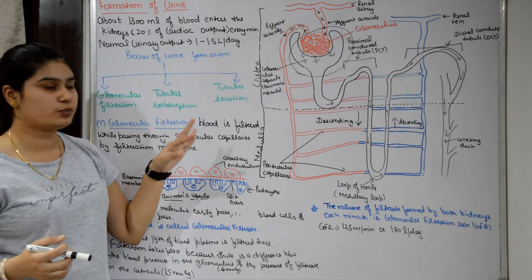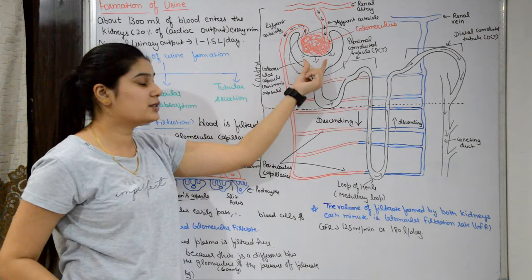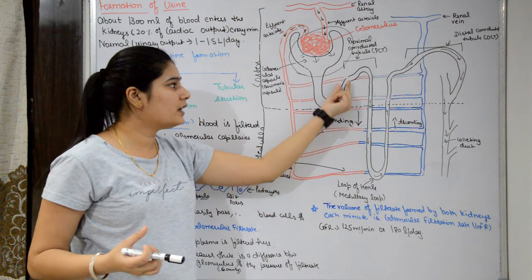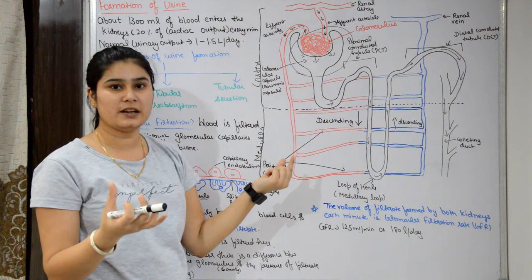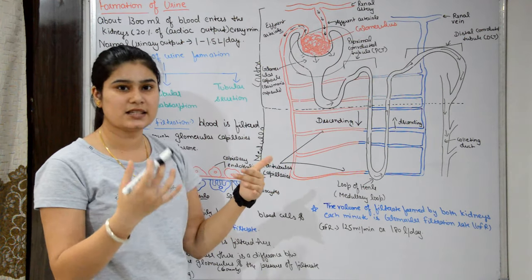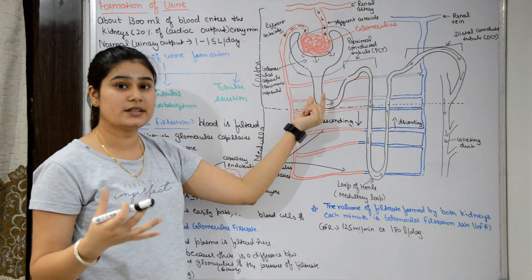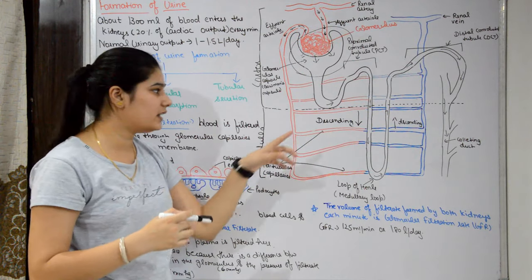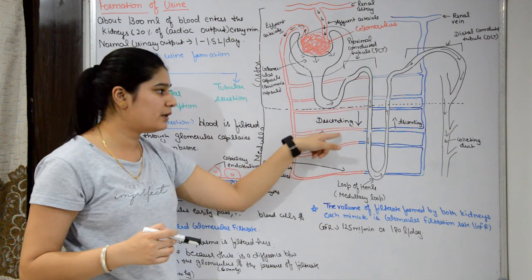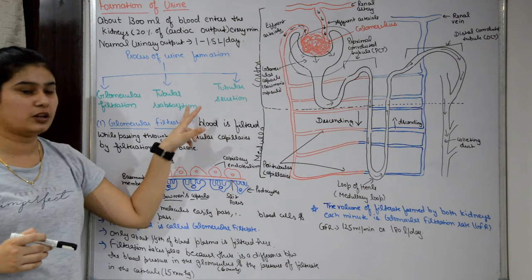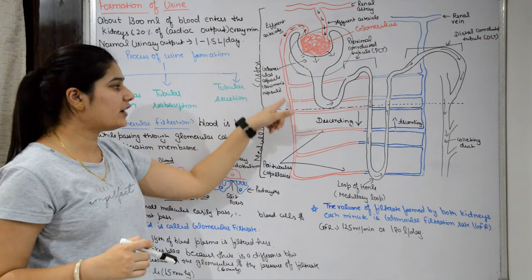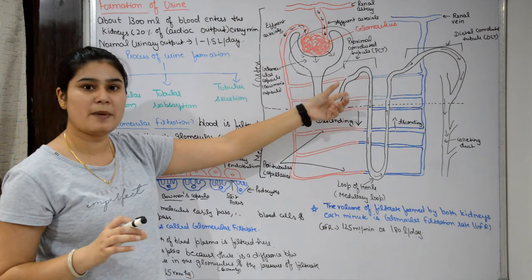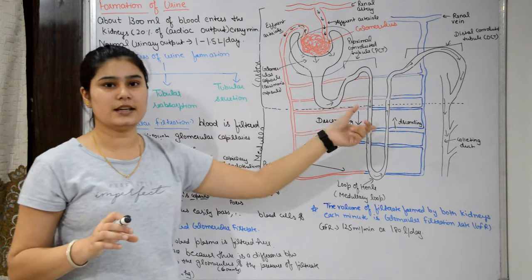The second step is tubular reabsorption. The filtrate enters the glomerular capsule and passes into the tubules. Important substances that the body still needs — such as amino acids and glucose — are reabsorbed back from the tubules into the peritubular capillaries. This process is called tubular reabsorption. Additionally, in tubular secretion, any remaining waste in the clean efferent arteriole blood is secreted back into the tubules.